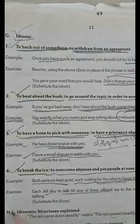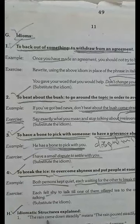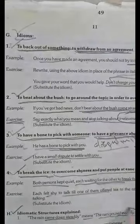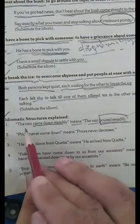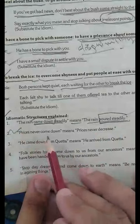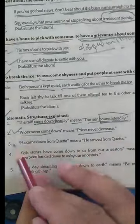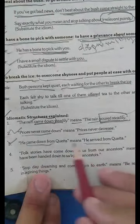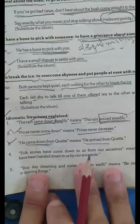Now, idiomatic structures explained. These words are used like idioms. First: 'The rain came down.' 'Came down steadily' means the rain poured steadily. The idiomatic structure explained: 'The wind came down' means to pour down. Second: 'The prices never come down' means decrease. The prices never decrease. Third: 'He came down from Qatar' means he arrived from Qatar.